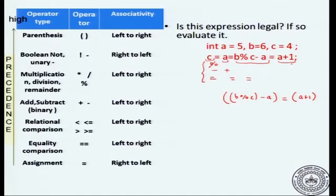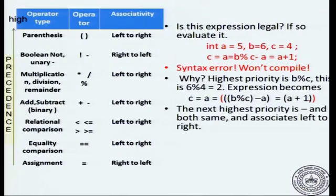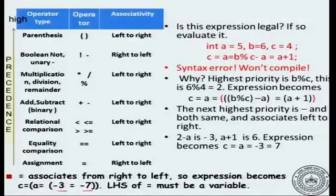The right-most assignment will be done first. Here is a sub-expression, here is a sub-expression, here is a sub-expression, and here is a sub-expression — so it is like assigning four terms and the innermost, right-most thing will be done first. The right-most assignment is b modulo c minus a assigned to a plus 1 — and this is a syntax error. When you work out the whole expression from right to left, you will see that it is trying to assign the number minus 3 to minus 7, which does not make any sense. The left-hand side of an assignment should be an assignable value — essentially a variable — and here you are trying to assign a number to another number.